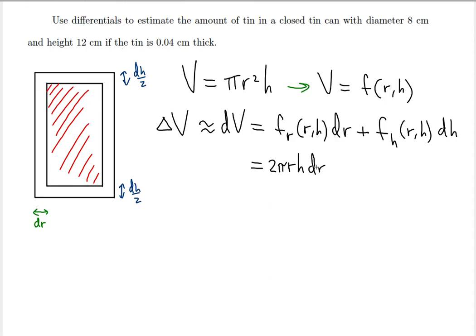So dV = 2πrh·dr + πr²·dh. Note that dr is the thickness on the sides, which is 0.04. And dh/2 is 0.04 for both the top and the bottom, so the total dh will be twice that: 0.08.